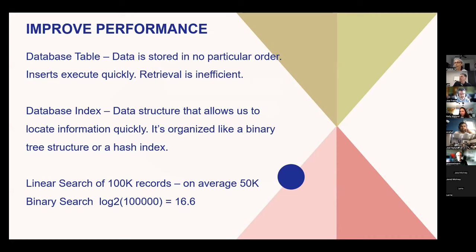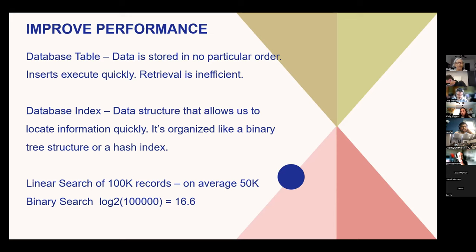Why do we use database indexes? To improve performance — that's the entire reason. Data in a relational database is not necessarily stored in a particular order. Data is typically stored in something called heap tables where records are inserted until it fills up a block of memory, and then it moves on to the next block. Inserts are quick, but retrieval is inefficient. So we use database indexes — separate data structures that allow us to find information quickly.